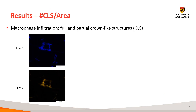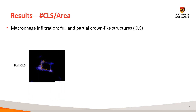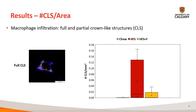For the macrophages, we quantified fluorescent profiles by overlaying DAPI with CY3. We see a greater number of crown-like structures in our high-fat, high-sucrose diet compared to both the chow and the fiber groups. However, this difference was actually not significant.